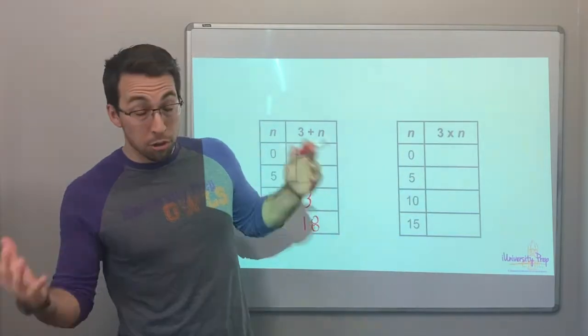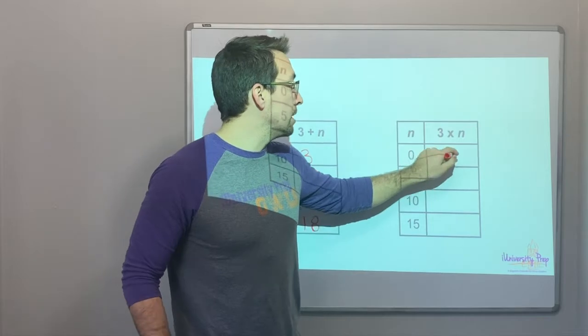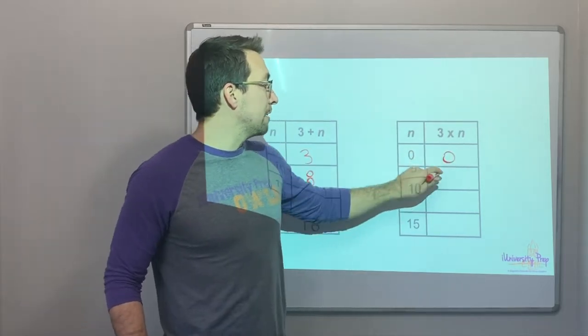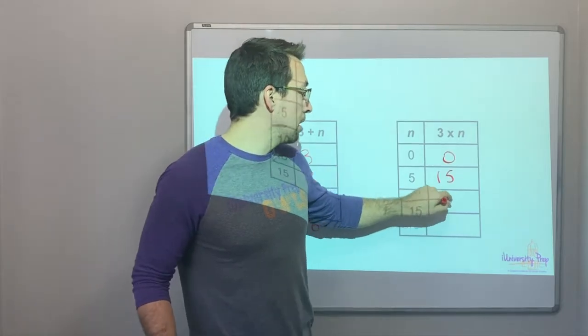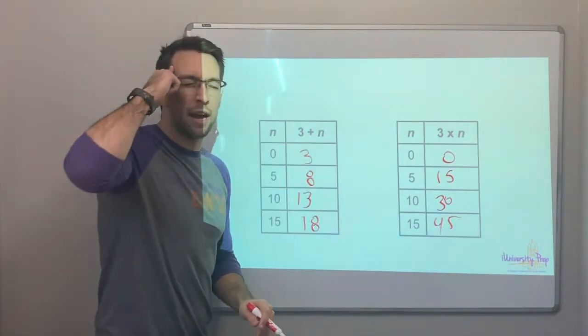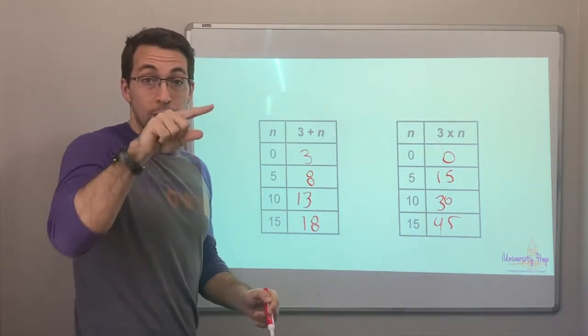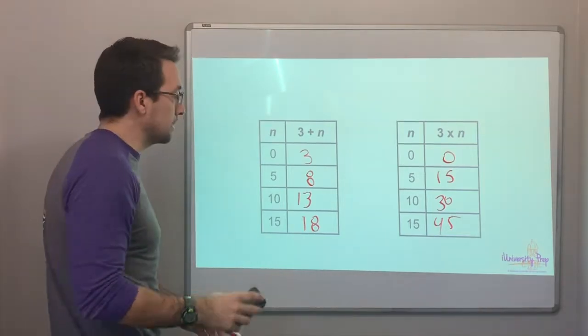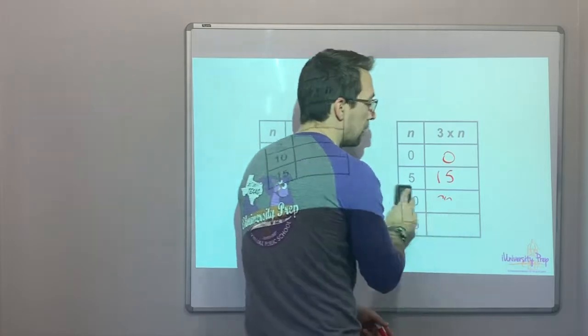n times three, or three times n is zero. Three times zero is zero. Three times five is fifteen. Three times ten, thirty. Three times fifteen is forty-five. Just like, think about a clock. Three times fifteen, well, that's forty-five minutes. Fifteen times four is sixty minutes. I always think about clocks.